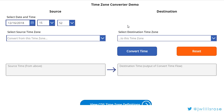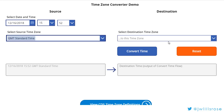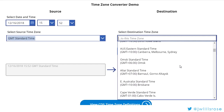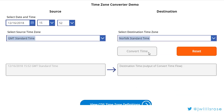Just as a reminder, this is what the app looks like — this is what we're headed for. The way it works is you pick your date and your time, it defaults to right now. You select your time zone, and then you select what you want to convert it to. You click Convert Time, and that starts the Flow which we built in Part 1. I'll talk more about how we use CDS in another video.